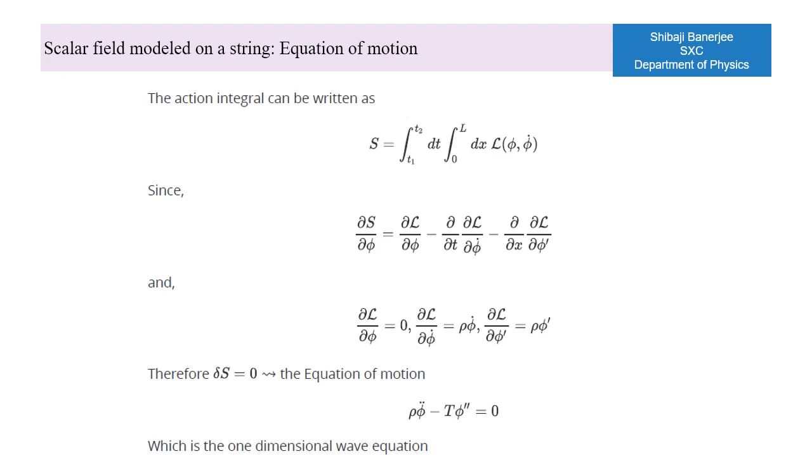We compute the functional derivative of the action and set it to zero according to the principle of least action. There is no dependence on field, only on its derivatives. The equation of motion one gets is the equation describing waves on the string. This example is a canonical one in that it establishes trust in the methodology of functional calculus through a familiar example.